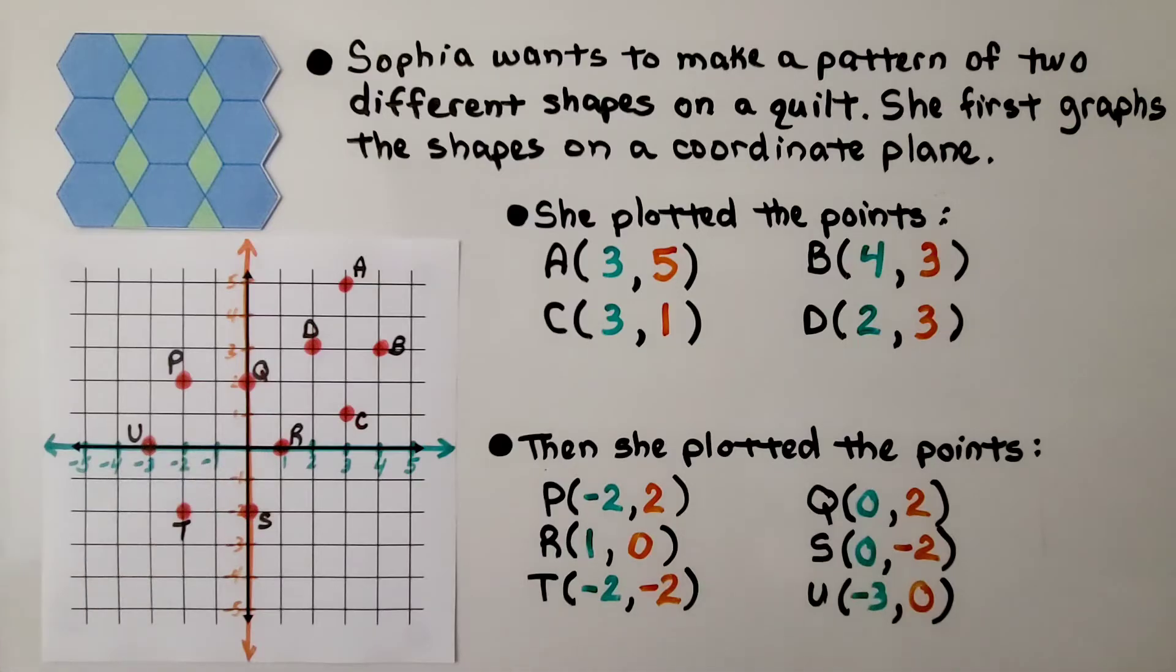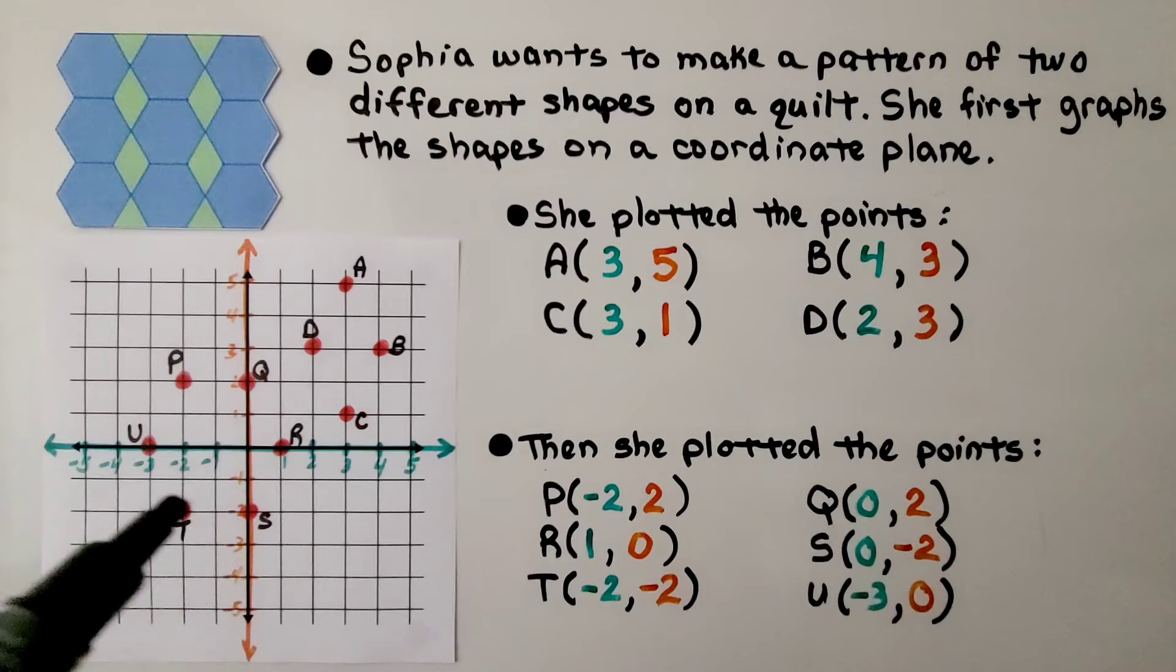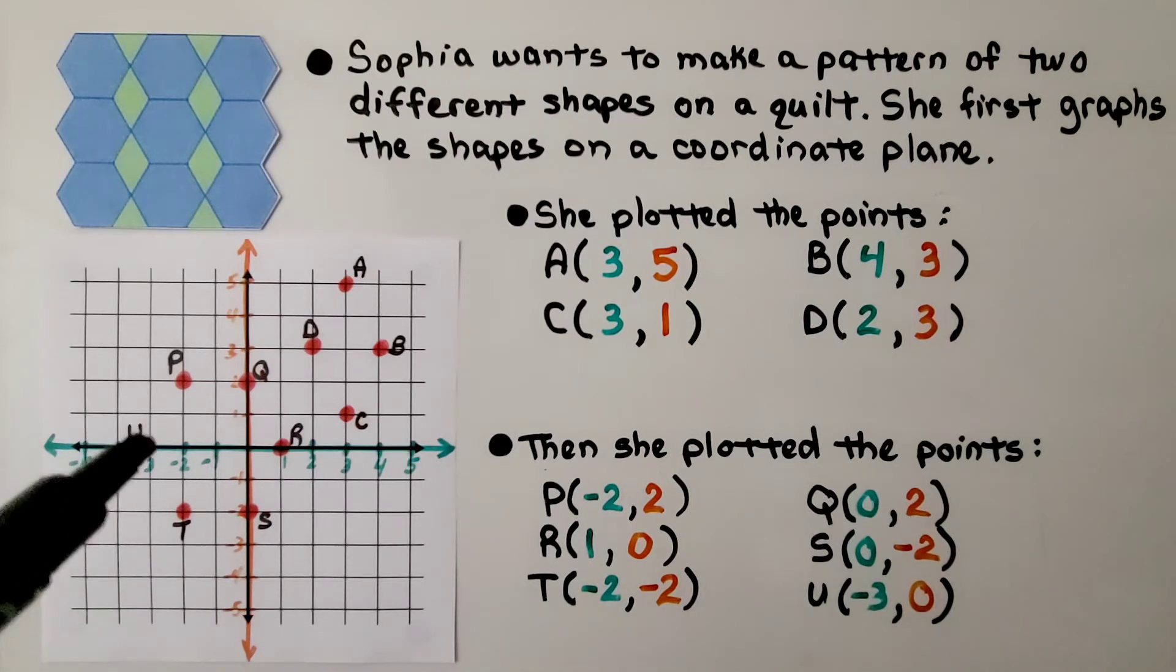That's the origin, isn't it? For point S, it's at 0 for x and negative 2 for y. For point T, it's at negative 2 for x and negative 2 for y. And point U is at negative 3 for x and 0 for y.